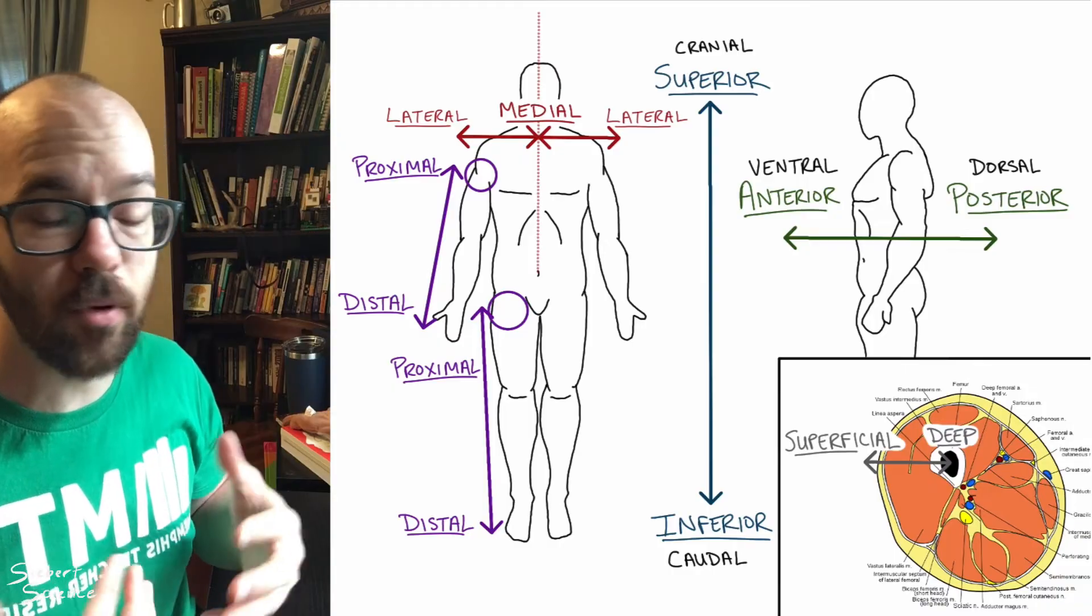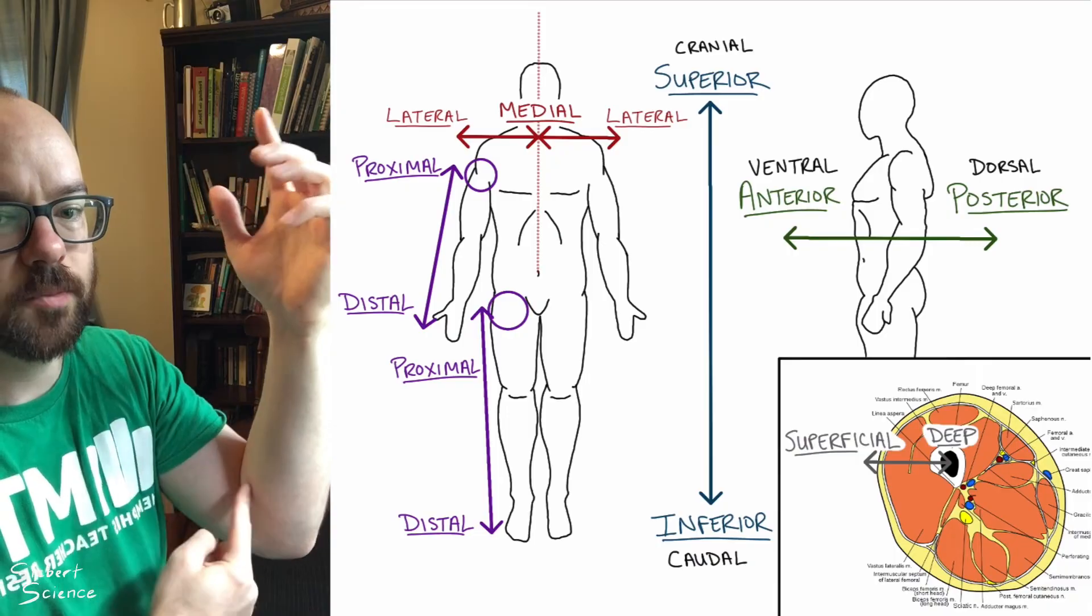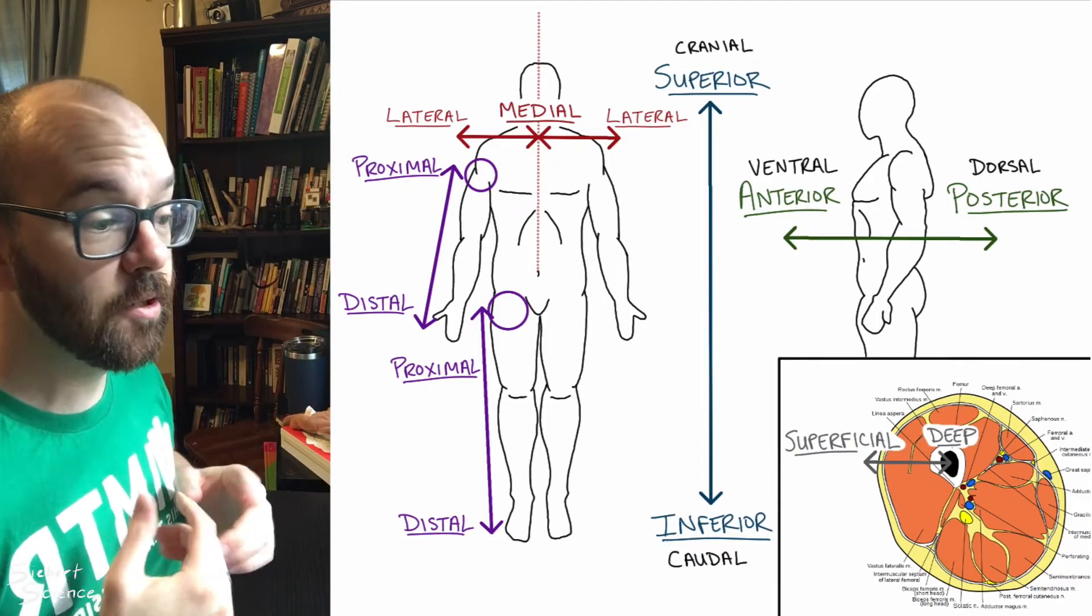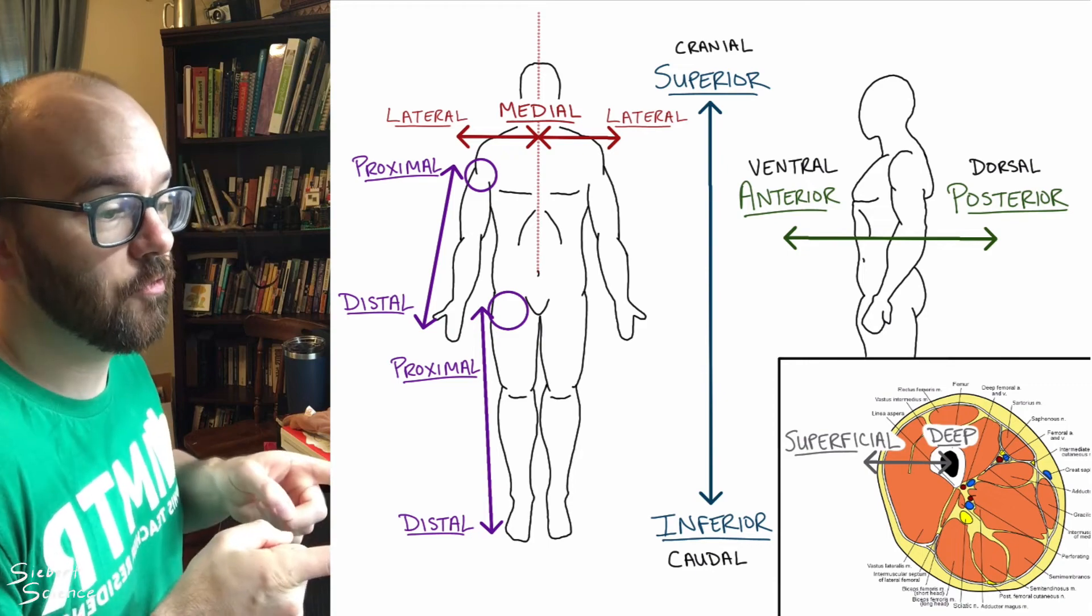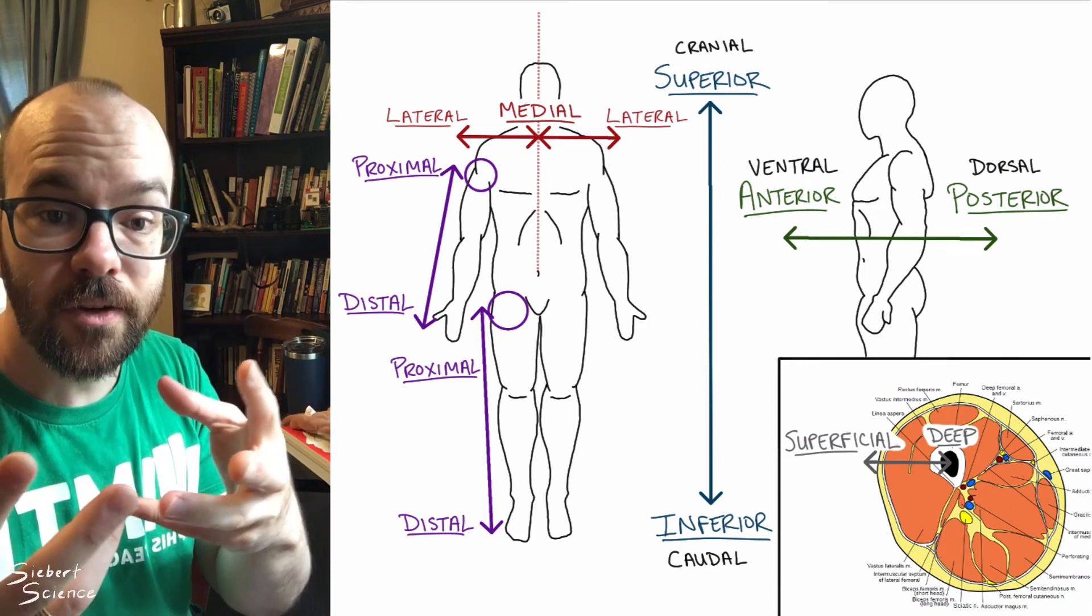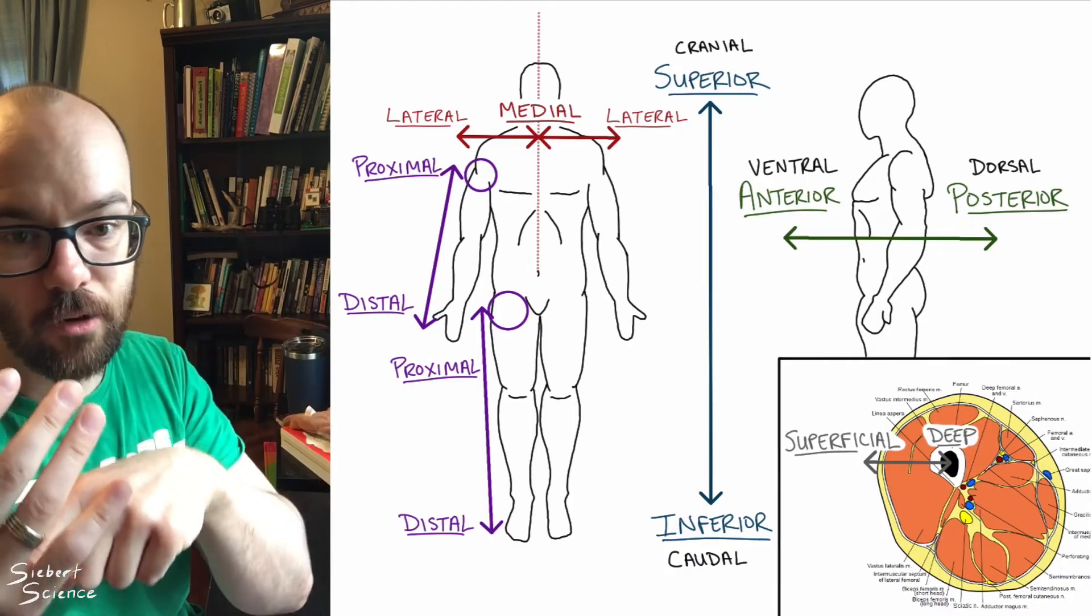For your arms and legs, we have proximal and distal. Proximal is going to be closer to the point of attachment, which is your shoulder or your hip. And distal means moving away from the shoulder or the hip towards the fingers. We've got anterior and posterior. Anterior toward the front in anatomical position, and posterior toward the back. And we're talking about layers. Superficial and deep. Superficial meaning toward the skin. Deep meaning toward the inside or away from the skin.